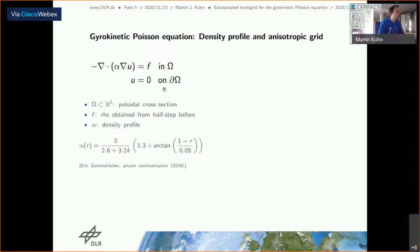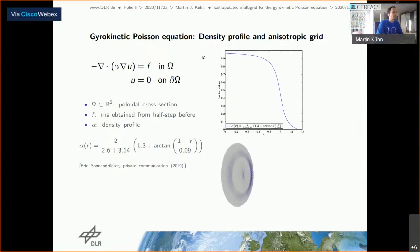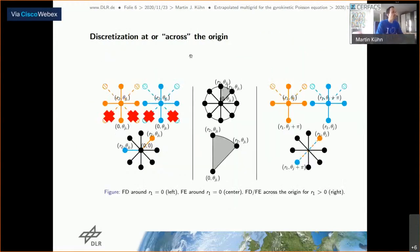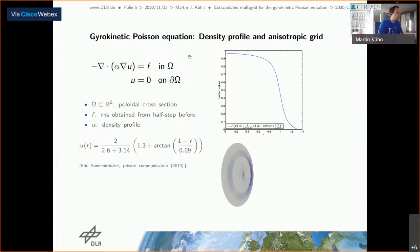The gyrokinetic Poisson equation reduces to a Poisson equation with a coefficient — a density profile alpha, motivated by the work of Erik Sonnenbrücker. We have this Poisson equation with coefficients on the poloidal cross-sections, with Dirichlet boundary conditions for the moment. The density profile drops from about 1 to about 0.1 in the area where the mesh is refined.